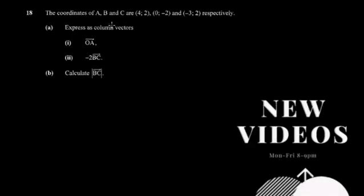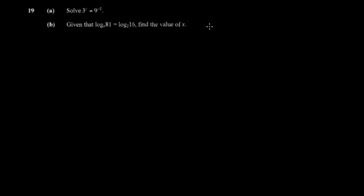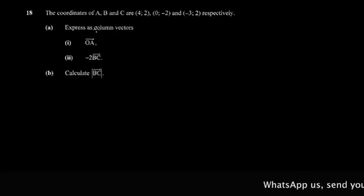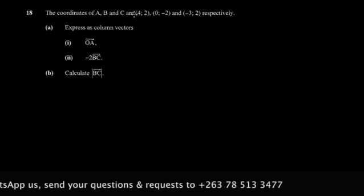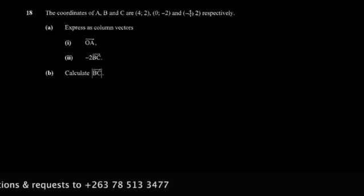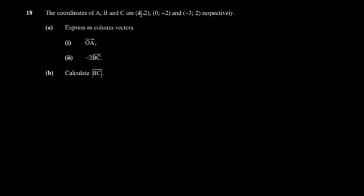We're going to continue from question 18, which is a vector question, and we'll also cover question 19. For question 18, you have the coordinates for points A, B, and C. A coordinate simply means you have the x-coordinate and the y-coordinate, which means those are the position vectors.